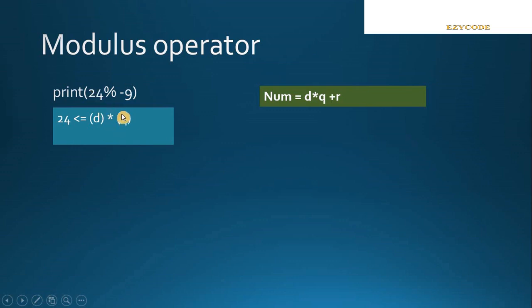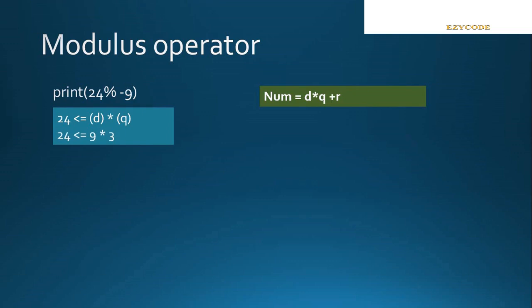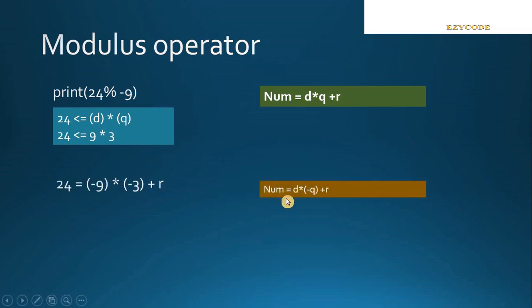So first we have to find out the quotient. The denominator is D and the quotient is Q. The denominator is minus 9 — forget about the negative sign for now and just take the denominator value as 9. We have to find Q such that 24 should be less than or equal to D multiplied by Q. So if I take Q as 3, then 24 is less than or equal to 27, which is correct.